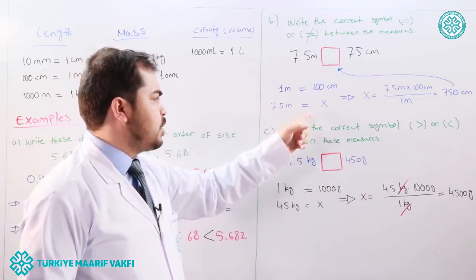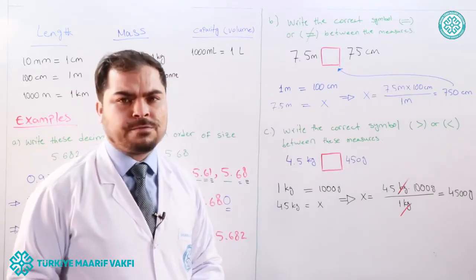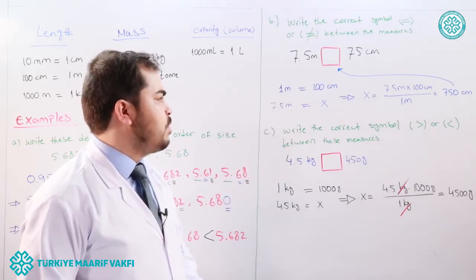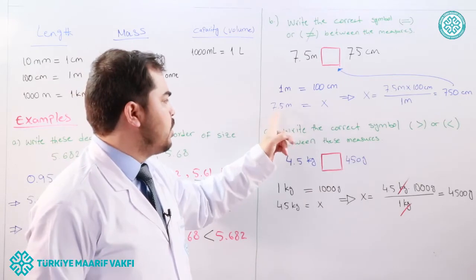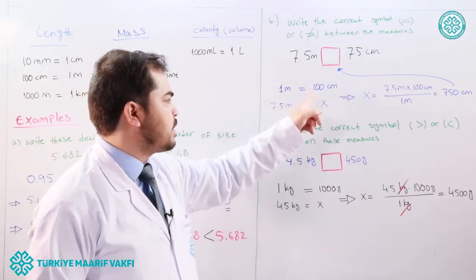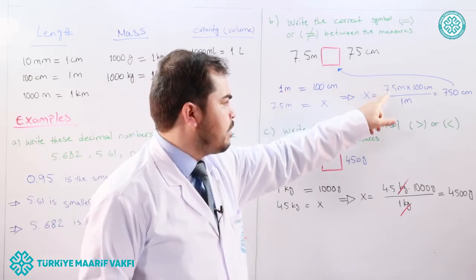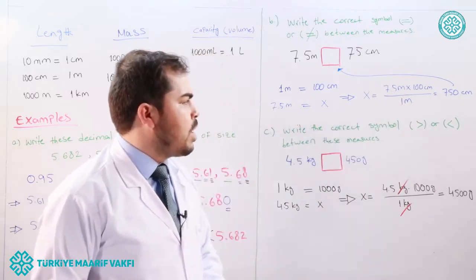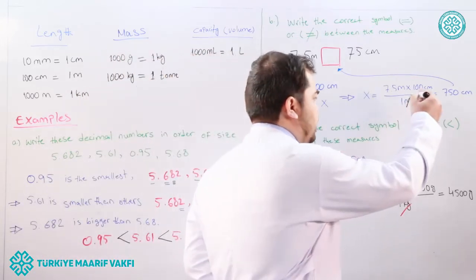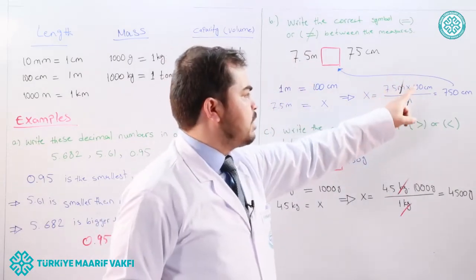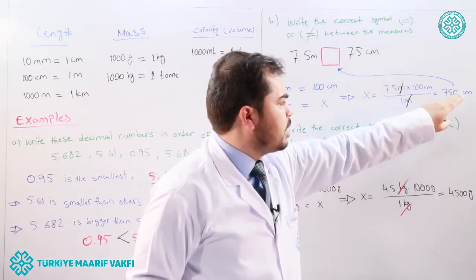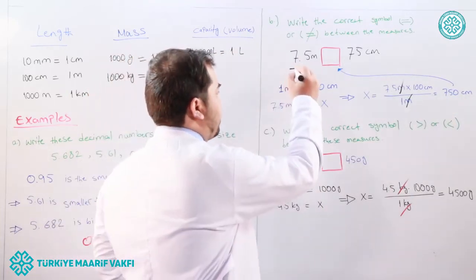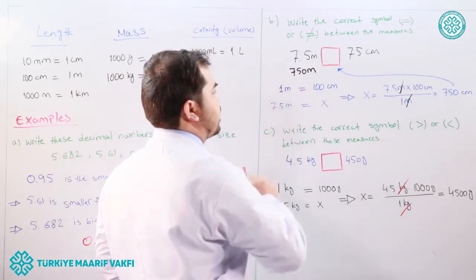Using cross multiplication: x equals 7.5 meters times 100 centimeters divided by 1 meter. The meter units cancel, giving us 7.5 times 100 equals 750 centimeters.